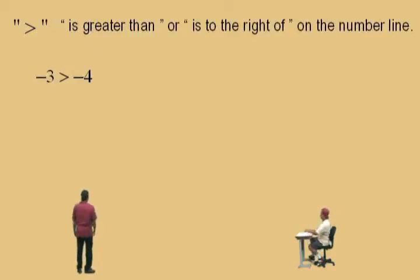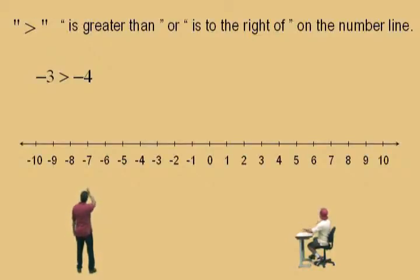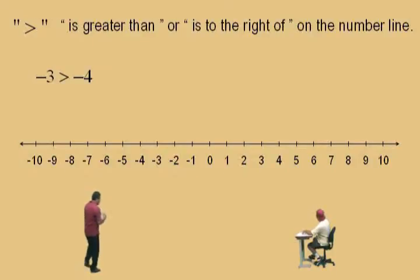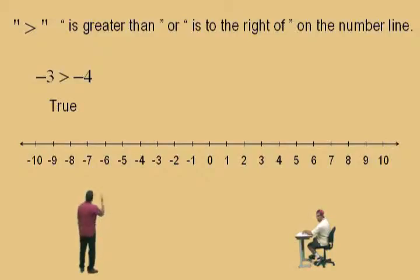You have to know which is the bigger number, obviously. How do you know which is the bigger number? Our approach will be to look at a number line. Here we go, Charlie. We're going to look at a number line here and realize a greater than symbol actually is saying 'is to the right of.' So if we look at this number line, Charlie, is negative 3 to the right of negative 4? Yes, it is, and therefore negative 3 is greater than negative 4, therefore this statement is true.